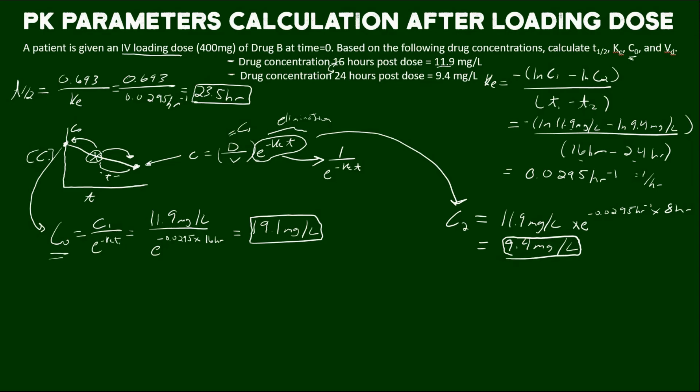Finally, let's calculate our volume of distribution. That's done with this handy calculation. I will say there are other ways to calculate volume of distribution which we'll probably go over in other videos. But based on the information we have in this problem, we're going to calculate it with dose over C0, where the dose was 400 milligrams and C0 we just calculated as 19.1 milligrams per liter. If we calculate that, we get 20.9 liters, where our milligrams cancel out and the liters goes to the numerator.